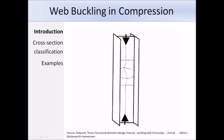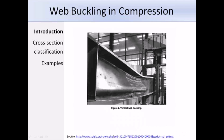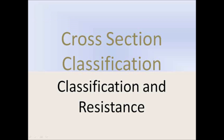This is the diagram showing local buckling of the web inside a column with an axial compression load. And here is a photograph showing local buckling of a web in a real-life situation. That concludes the introduction; the next section covers the cross-section classification method using Eurocode 3 and the cross-section resistance to bending.